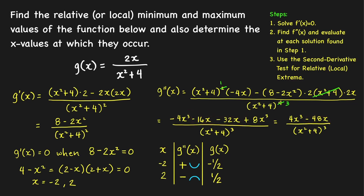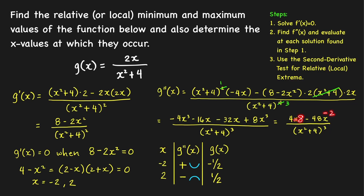Now we determine the sign of the second derivative at each critical number. When x equals negative 2, the numerator gives negative 32 plus 96, which is positive. When x equals 2, the numerator gives 32 minus 96, which is negative.